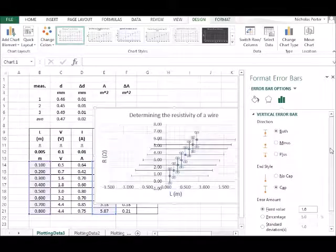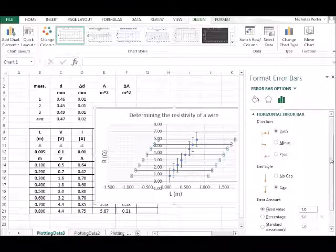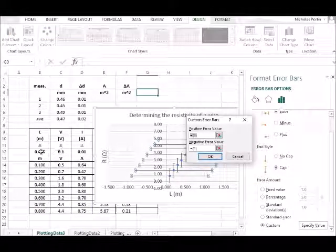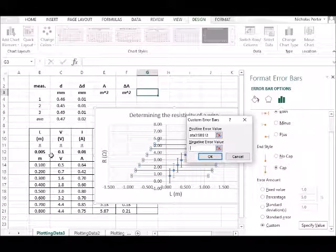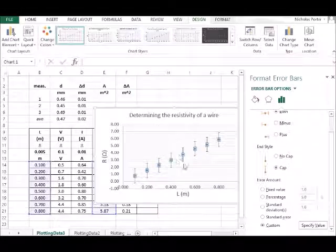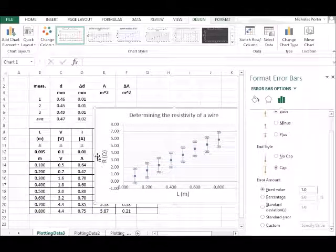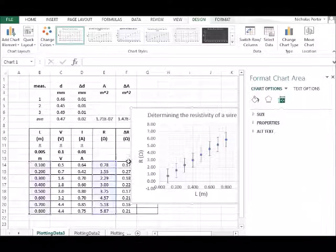Now if you go to extra options at the bottom, you can add a fixed value. If I'm looking at the horizontal error bars at the moment, I can choose a custom value, and for this I'm just going to pick that value for the X error bar, or L error bar, as a fixed value from the table. Now you can see from this, it's negligible, and we can't really see it.